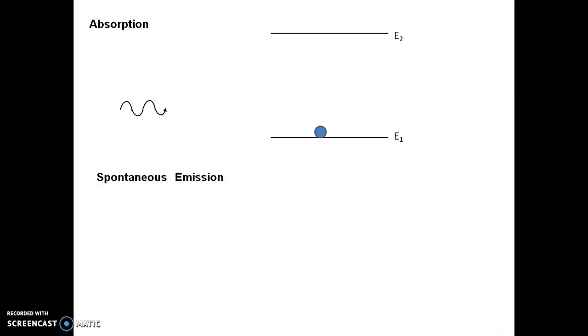So let's see how absorption takes place. Consider an atomic system with two energy levels E1 and E2. When a photon of energy h nu equal to E2 minus E1 is incident on this atomic system, then energy of the photon is absorbed by the atom at ground state and it gets excited to the energy level E2. This process is called absorption.